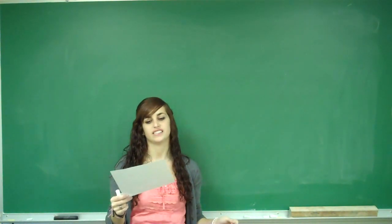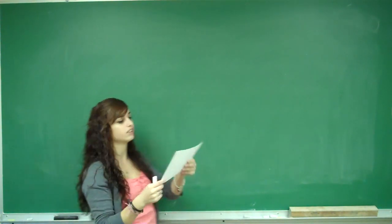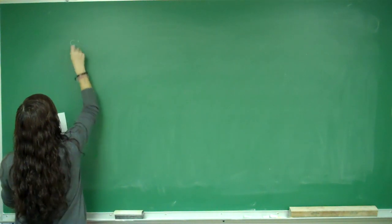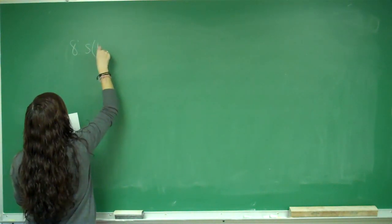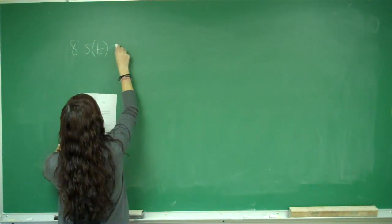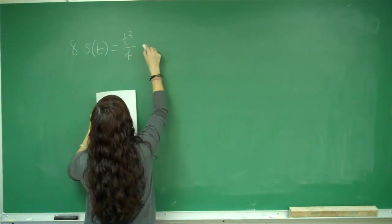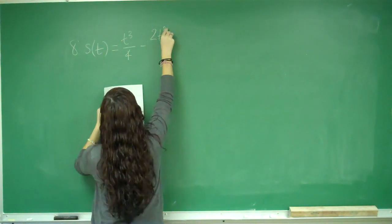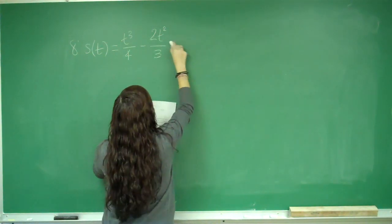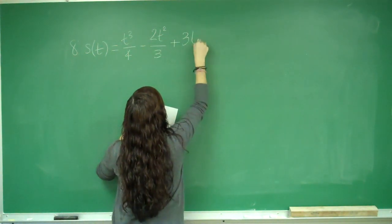This is problem number 8. It says the position of an object moving along the path is given by this function. S of t is equal to t cubed over 4 minus 2t squared over 3 plus 3t.